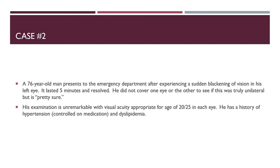Case 2 is a 76-year-old man who presents to the emergency department after experiencing a sudden blackening of vision in his left eye lasting five minutes and then resolving. He did not cover one eye to confirm it was truly unilateral, but is fairly sure. His examination is unremarkable with visual acuity of 20/25 in each eye; the anterior segment and fundoscopic examination are also unremarkable. He has a history of hypertension and dyslipidemia. Given these findings and the transient loss of vision, this appears to be a vascular event, though it is difficult to determine whether it is in the anterior or posterior visual pathway.